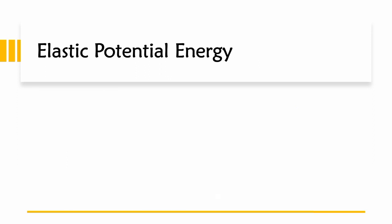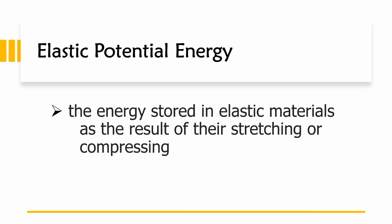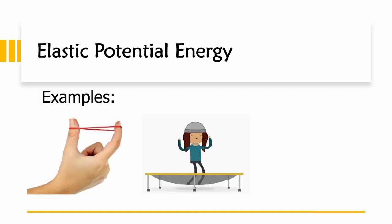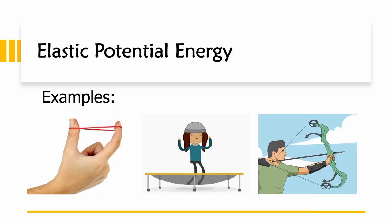The second type of potential energy is elastic potential energy. It is the energy stored in elastic materials as the result of their stretching or compressing. Elastic potential energy can be stored in rubber bands, trampolines, or an arrow drawn into a bow.